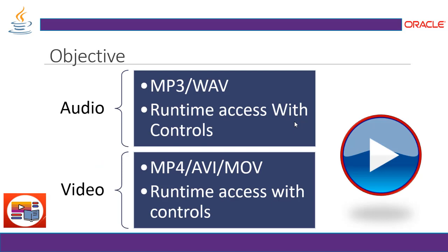Objective. This session is divided into two parts: audio player and video player. In the audio player, we have many types of file formats, out of which we are going to take an example of MP3 and WAVE (W-A-V-E) file formats for audio support. The player will support these files with runtime access and controls — we will open the file, select the MP3 or WAVE file, and play it, along with many other basic controls.